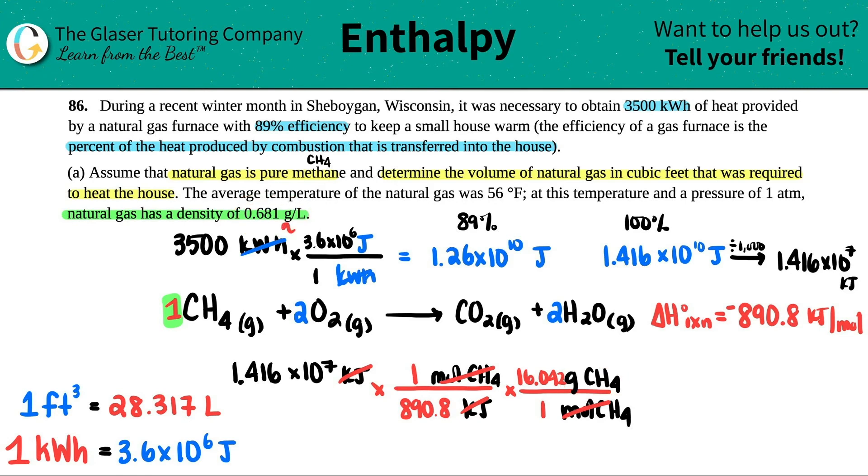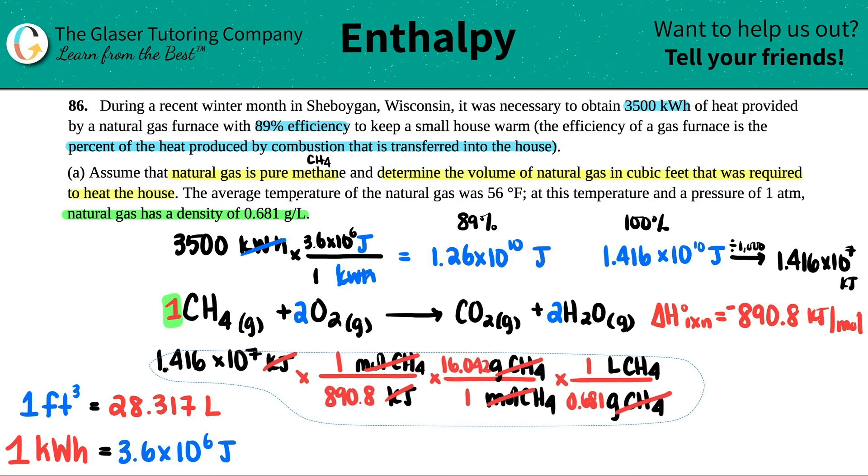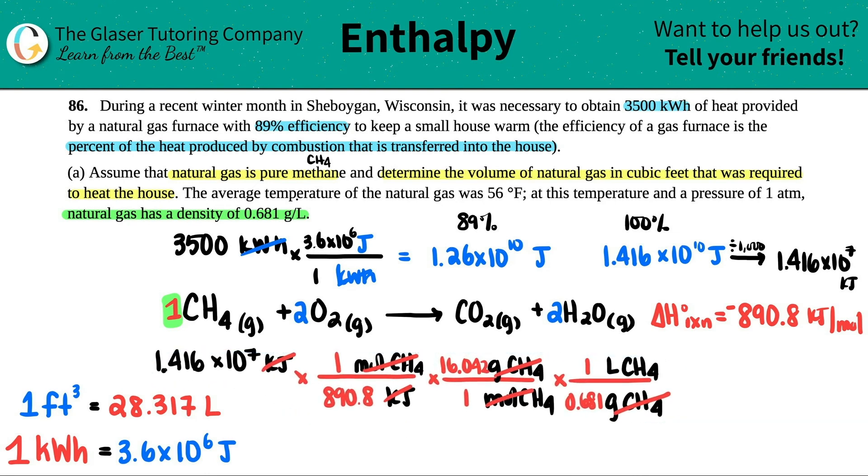Now use the density formula. I have grams, so I can go from grams to liters. Grams of CH4 on bottom, liters on top: 0.681 grams per one liter. The one liter goes on top, 0.681 on bottom. Grams cancel out, and now we're in liters.